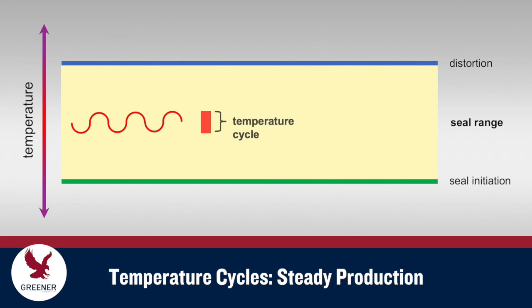During steady production, temperatures dip as the sealing jaws transfer heat to the packaging material and then recover when the heat cartridges are energized.